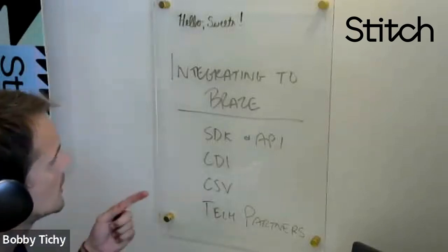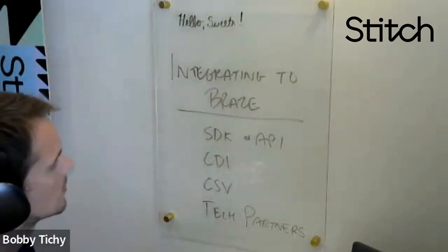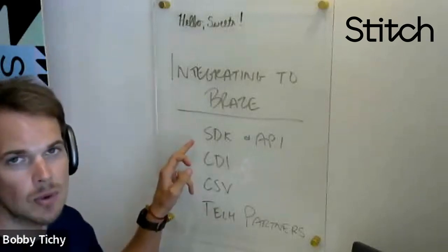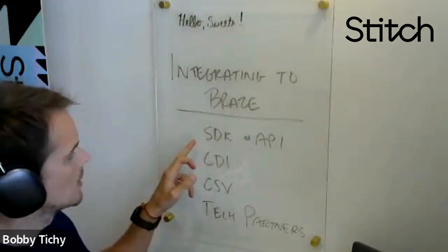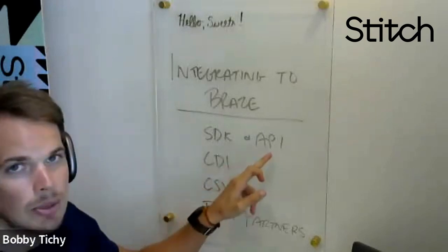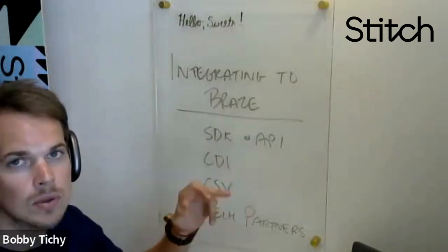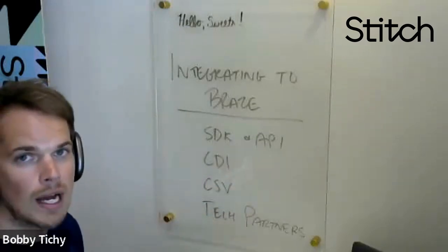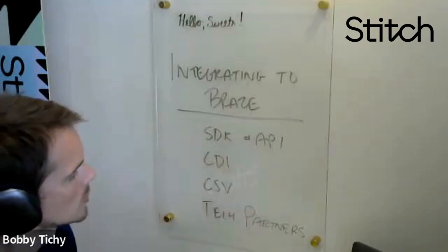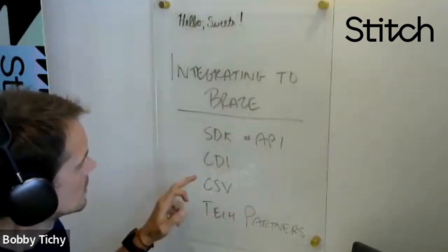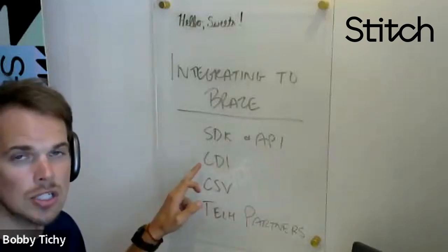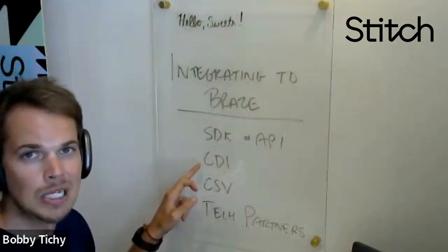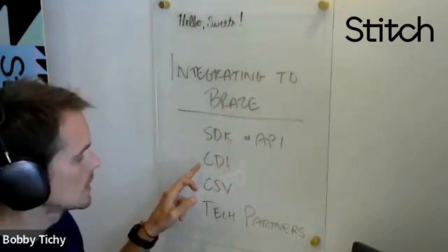First, to highlight the four key ways that we can integrate data into Braze. Number one is through the SDK — Braze has both a mobile and web SDK that integrates directly into their platform, or through the API, which could be from any number of platforms, your website, or your own proprietary platform using Braze's REST API. Next is cloud data ingestion, through many of the key data warehouses in the market today: Redshift, BigQuery, Snowflake, and Databricks.